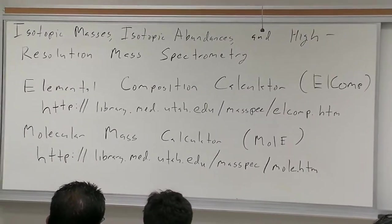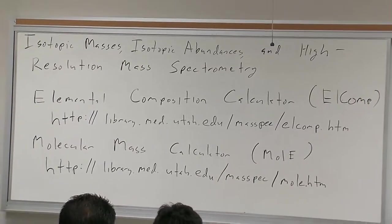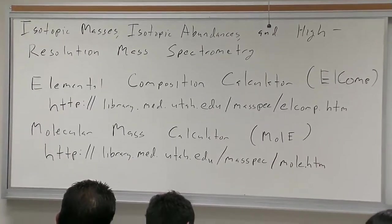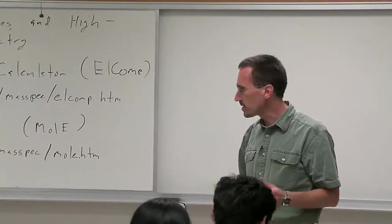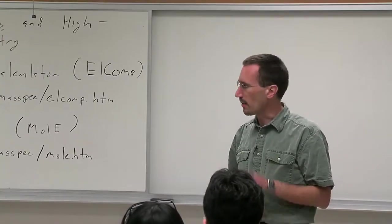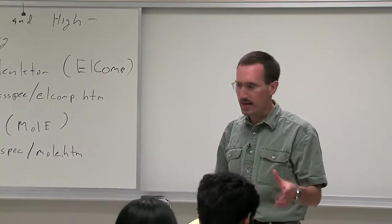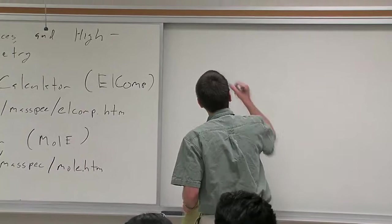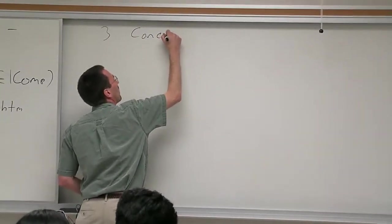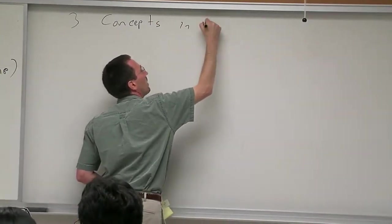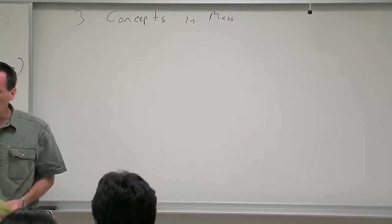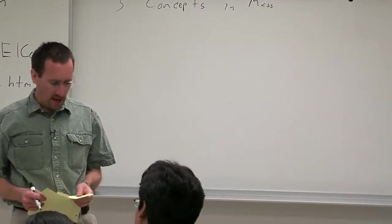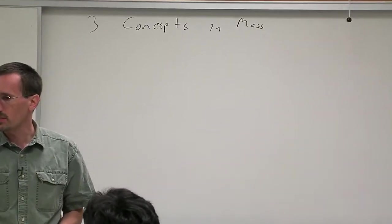Last time we introduced mass spec and talked about how the technique worked. We introduced one big idea: you had to have an ion. In EI mass spec we got that ion from kicking out an electron, and then we talked about CI and other soft ionization techniques like MALDI and electrospray ionization. The big idea there is you get an ion by adding a proton or adding a sodium to the molecule.